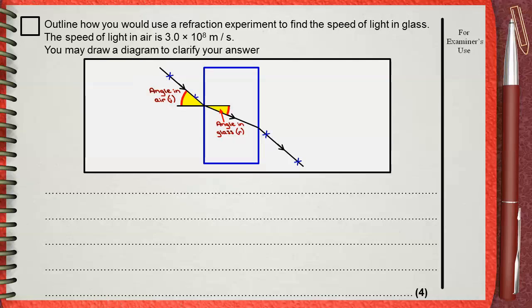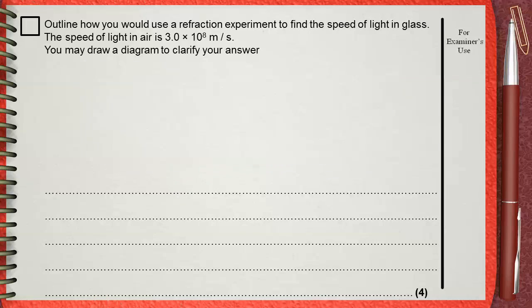Now you can find the refractive index of glass. And if we calculate the refractive index of glass, we can simply find the speed of light in glass. So let's see how to answer this question from the beginning.